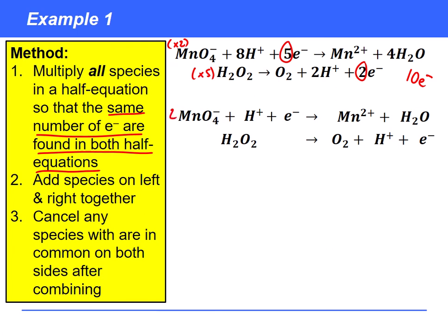So if we do that here we're going to have 2MnO4- plus 16H+ plus 10e- goes to 2Mn2+ plus 8H2O. And the bottom one to multiply by five we're going to get 5H2O2, 5O2, 10H+ and 10 electrons.